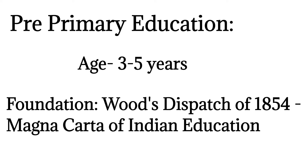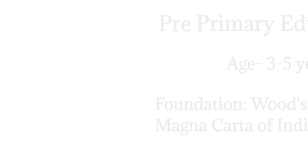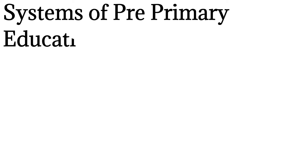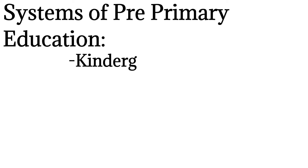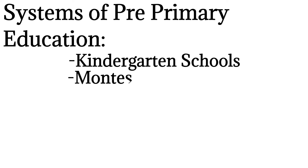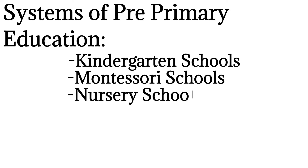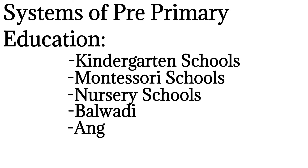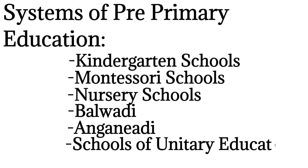The children are introduced to alphabetical and mathematical concepts, develop logical and reasoning skills, and explore their surroundings. Wood's Dispatch of 1854 laid the foundation for the present education system. The Wood's Dispatch is known as the Magna Carta of Indian education. The types of systems of pre-primary education are: kindergarten schools, Montessori schools, nursery schools, Palwadi, Anganwadi, and schools of unitary education.